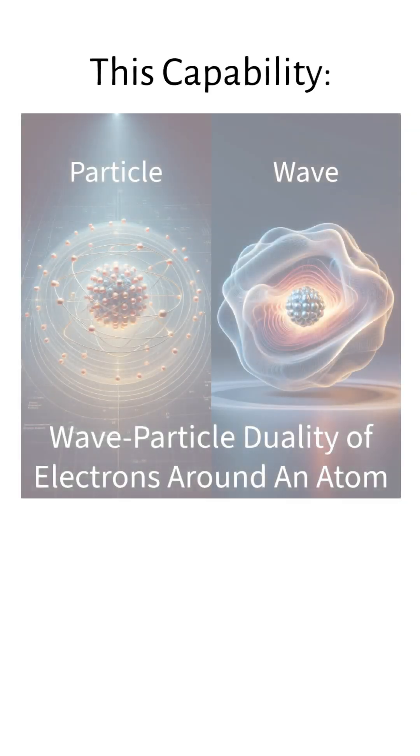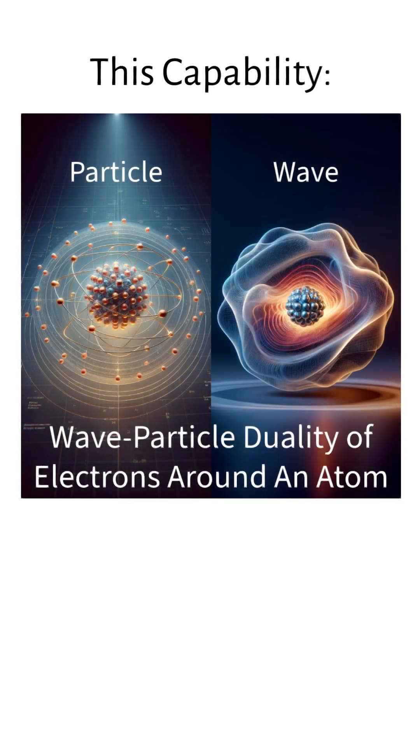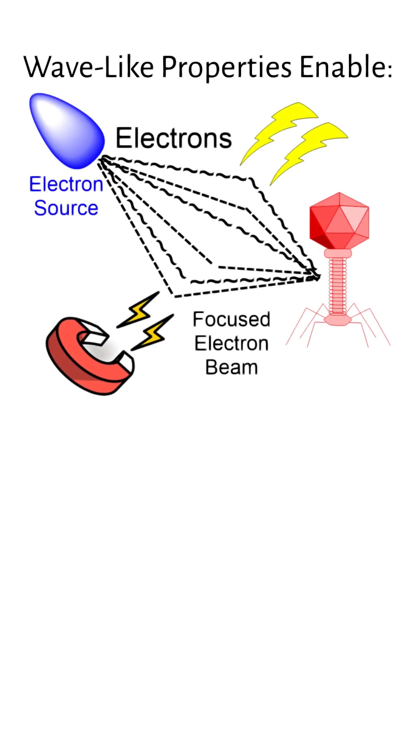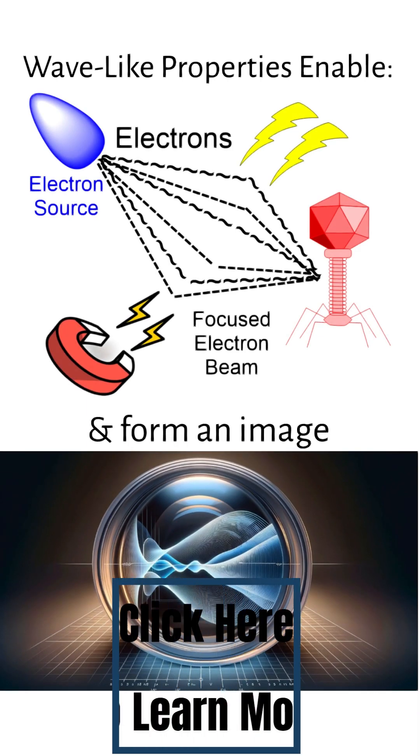This capability is due to the quantum mechanic principle of wave-particle duality, as introduced by Louis de Broglie, that moving matter like electrons have wave-like properties. Because of their wave-like properties, electrons can be focused using magnetic and electric fields to form an image, much like light waves can be focused with lenses.